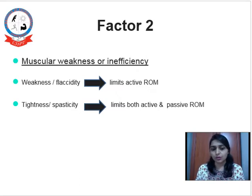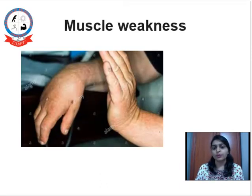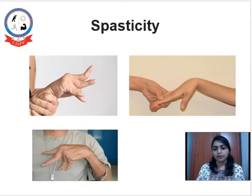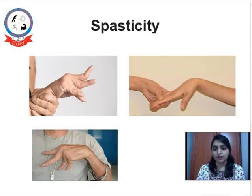Next factor — Factor 2 is muscle weakness or inefficiency. There can be either muscular weakness or tightness. Weakness means flaccidity, which limits active range of motion. Tightness or spasticity limits both active and passive range of motion. For example, if a patient has flaccid paralysis, the patient will not be able to do active range of motion. If it is spastic paralysis, there will be a deformed spastic hand or leg which gives abnormal movement — not normal smooth rhythmical movement — thus limiting and not allowing full range of motion, with restriction in both passive and active range of motion.